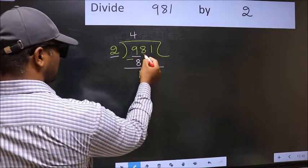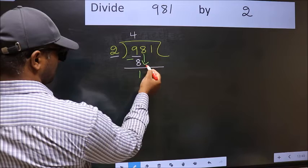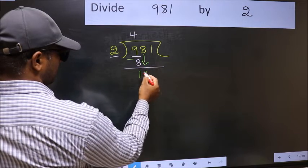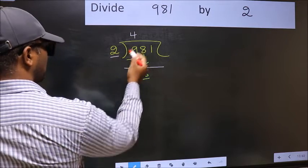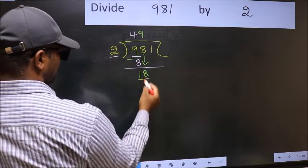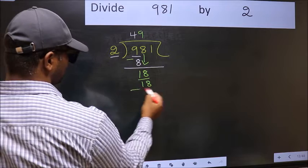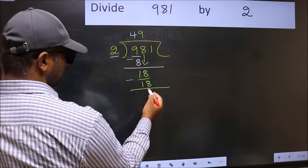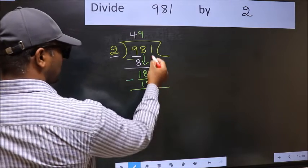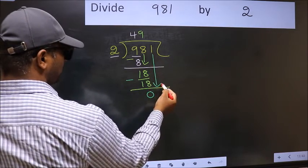After this, you should bring down the beside number. So 8 down. Now 18. When do we get 18 in 2 table? 2 nines, 18. Now you should subtract. 18 minus 18, 0. After this, you should bring down the beside number.